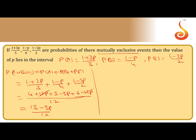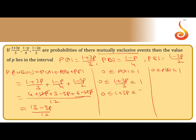We know 0 ≤ P(A) ≤ 1, so 0 ≤ (1 + 3p)/3 ≤ 1, which gives 0 ≤ 1 + 3p ≤ 3. Subtracting 1: −1 ≤ 3p ≤ 2. Dividing by 3: −1/3 ≤ p ≤ 2/3. This is inequality 1.